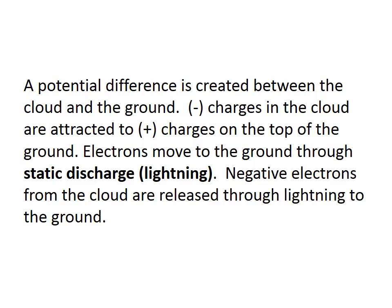Let's see what we should write about number four. A potential difference is created between the cloud and the ground. Negative charges in the cloud are attracted to positive charges in the top of the ground. Electrons move to the ground through static discharge, also called lightning. Negative electrons from the cloud are released through the lightning to the ground.